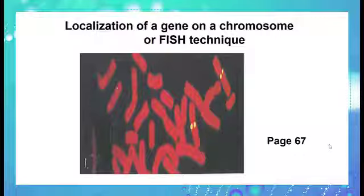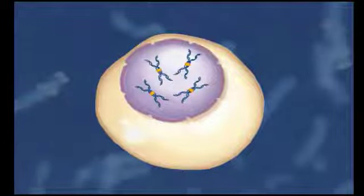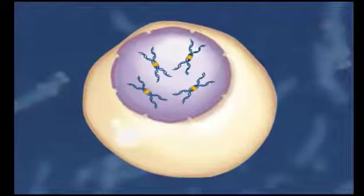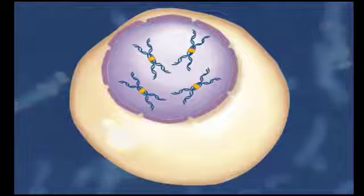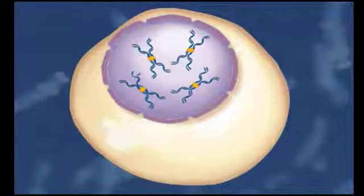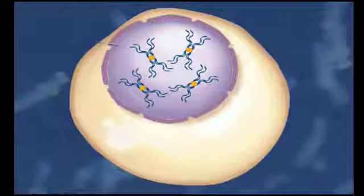Let's learn the steps of this technique based on your book page 67 part 1. First, the cells have been treated to make them swell and then they are fixed onto the surface of the slide. The slide is treated and the chromosomal DNA is denatured into single strands.